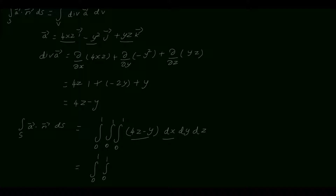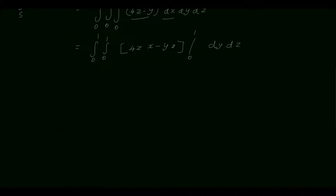Keeping the limits of y and z as they are, integrating 4z minus y with respect to x gives 4z times x minus yx. Applying limits from 0 to 1: with upper limit x equals 1, we get 4z minus y; with lower limit x equals 0, we get 0. So the result is 4z minus y, into dy dz.